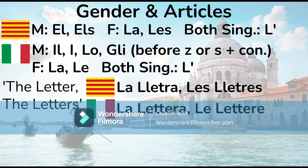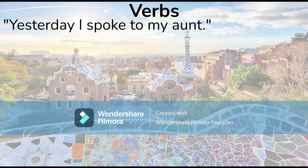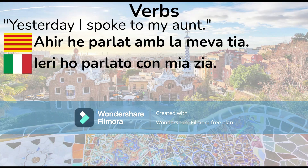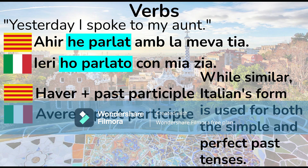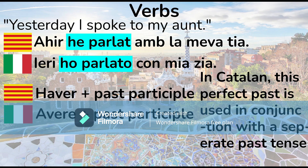Verbs. Let's take a look at a sentence meaning 'yesterday I spoke to my aunt.' In Catalan: 'ahir he parlat amb la meva tieta,' and in Italian: 'ieri ho parlato con la mia zia.' Notice how both languages construct the past tense — it's formed with 'haver' plus the past participle in Catalan, just as it is in Italian with 'avere' plus the past participle. While similar, Italian's form is used for both the simple past and perfect past tenses. In Catalan, this perfect past is used in conjunction with the separate past tense.